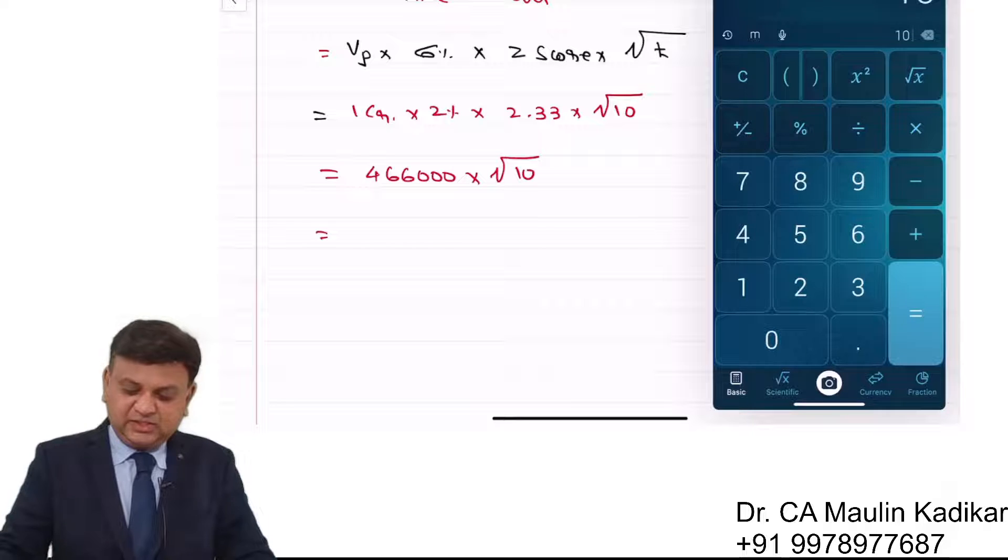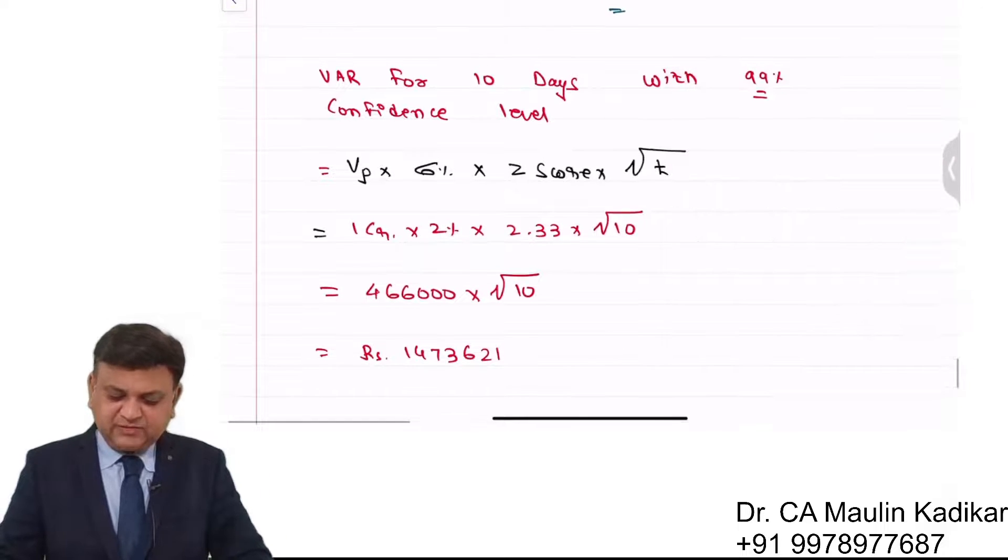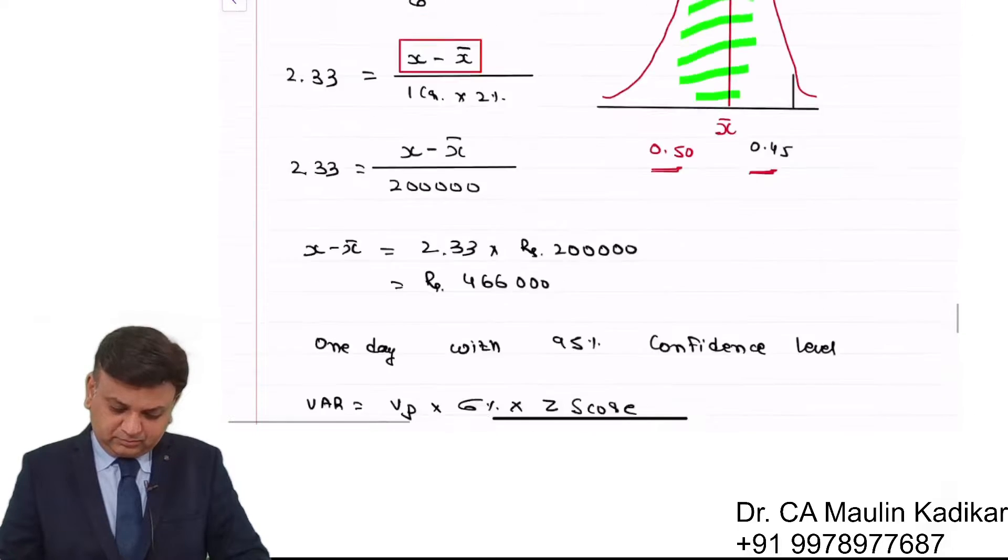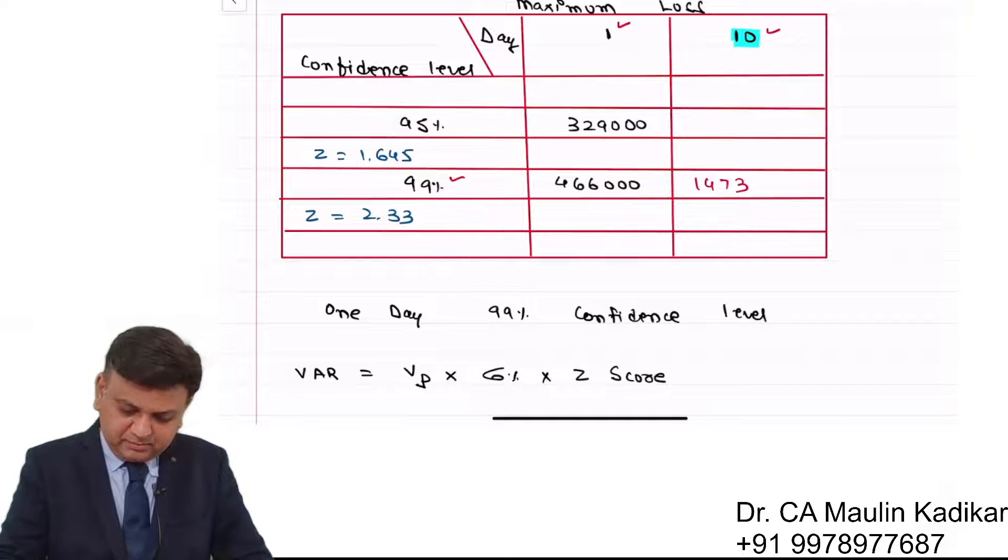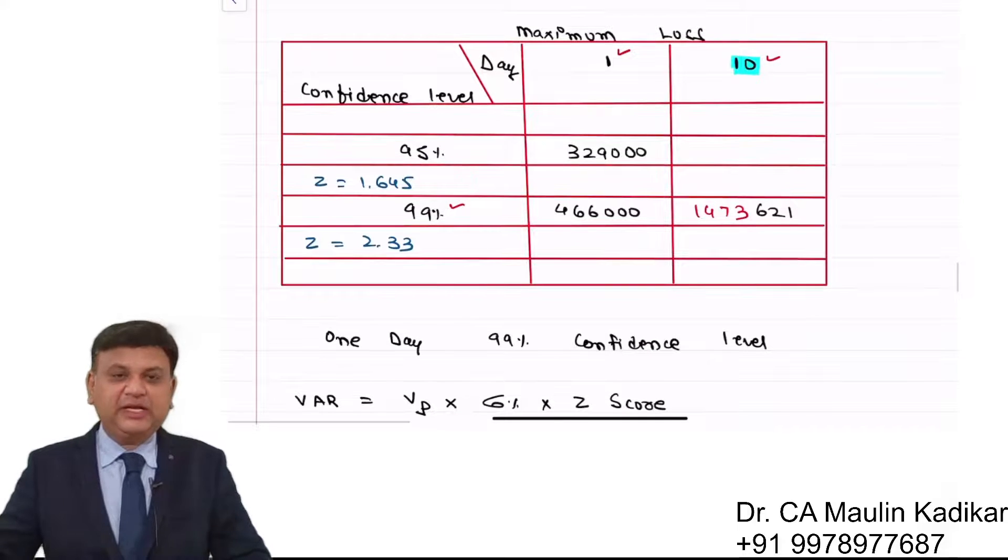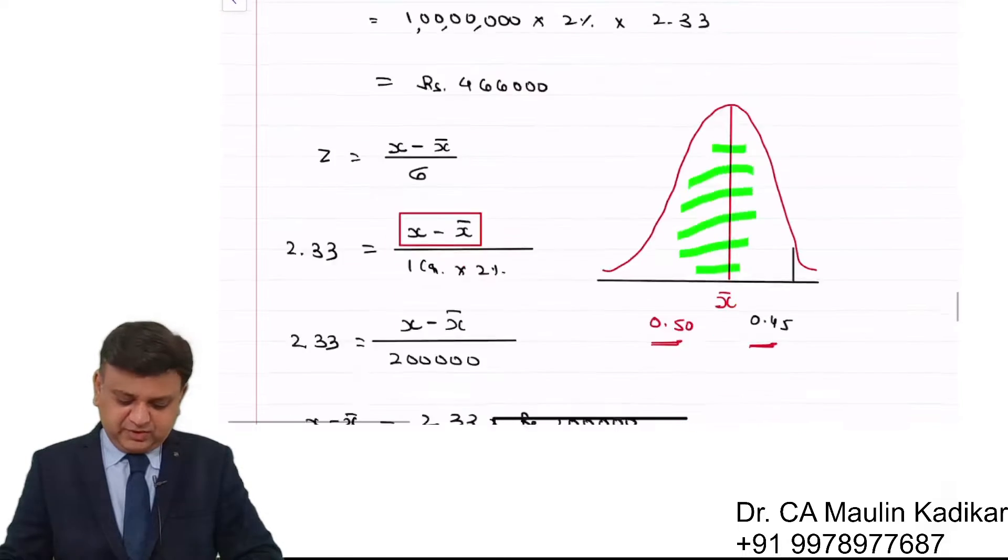The time period is 10 days, so we take its square root times 4,66,000, which comes to rupees 14,73,621. So this is the VAR of 10 days with 99% confidence level. So 14,73,621, and similarly we have to do it for 95%.